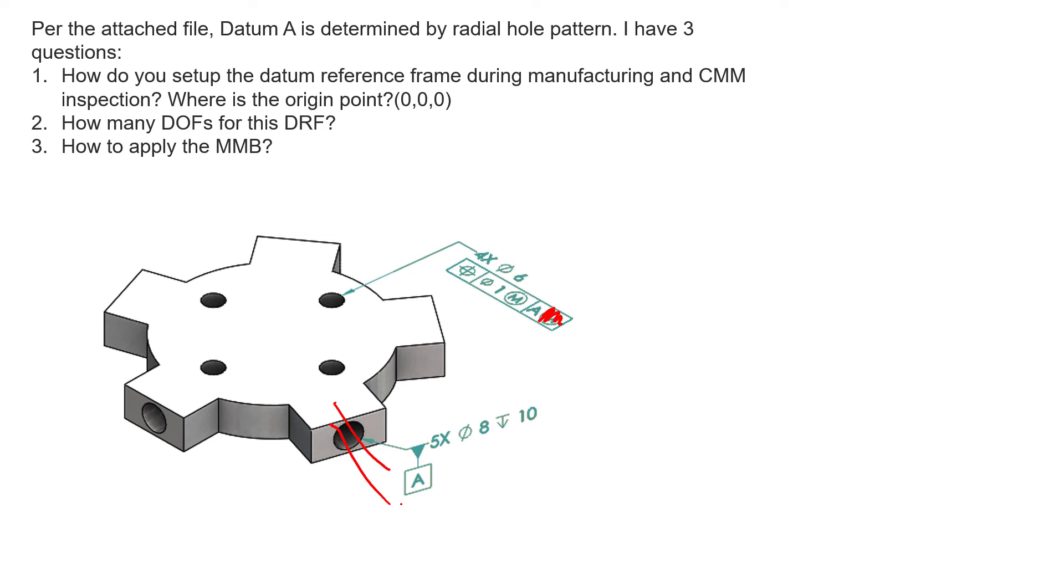That cylinder's origin is going to start at the axis, the true position of each one of these. So we know exactly where the true position of each hole is relative to each other. It's going to expand a cylinder on each one of these axes, and all five of these cylinders are going to expand simultaneously.